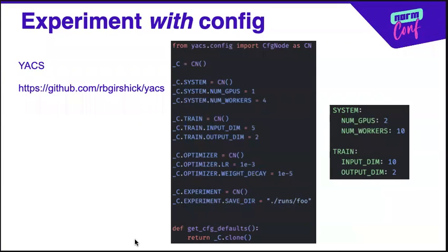In YACS, you would first define a set of parameters and assign each of them default values. Here we see that the parameter values are grouped into four distinct sections, each denoting the purpose of those parameters.